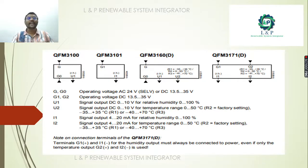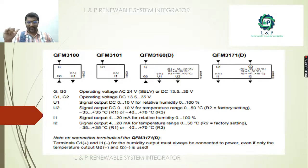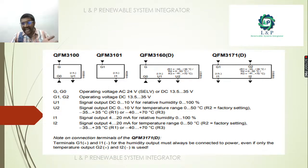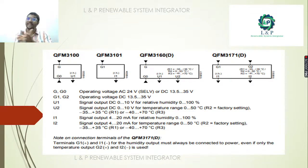The QFM 3160D has terminals G, G0, U1, and U2 where you can get temperature and humidity as a 0 to 10V DC output. For model QFM 3171D, which has terminals G1, G2, and I1, if you plan to get your temperature signal as a 4 to 20 milliamp current output, you can choose this model. It also allows you to monitor both temperature and humidity.